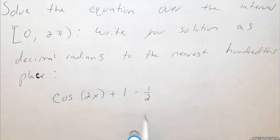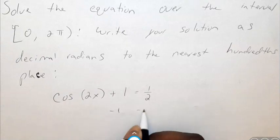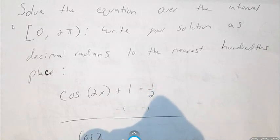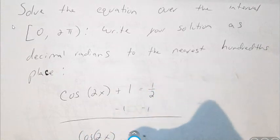If I begin, you want to isolate the cosine of 2x by subtracting 1 from both sides. So now what you have is cosine of 2x equals negative 1 half.